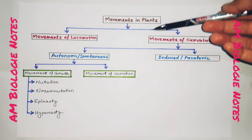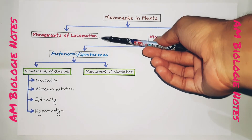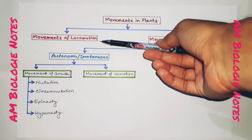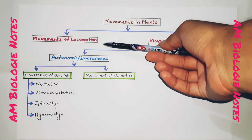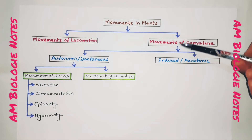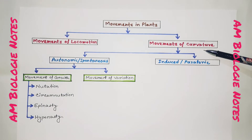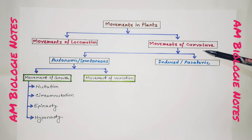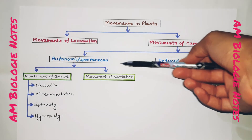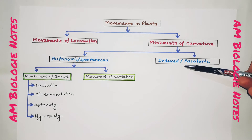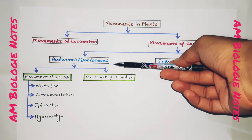In the last video, I had discussed about the different types of movements of locomotion in plants with examples. In this diagram, I have shown the types of movements of curvature in plants only.